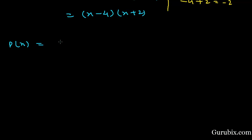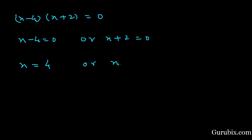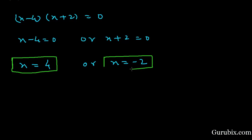This gives us (x minus 4) into (x plus 2). Now we set the polynomial p(x) equal to 0, which means (x minus 4)(x plus 2) equals 0. This means x minus 4 equals 0 or x plus 2 equals 0, giving x equals plus 4 or x equals minus 2. These are the two zeros of the given polynomial p(x).